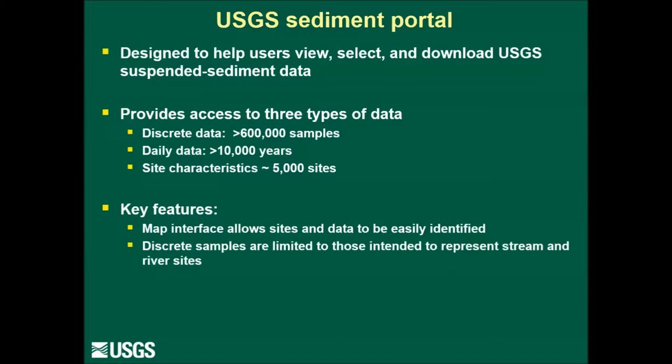The second key feature is that only sites and data provided in the portal are those that were collected with the intention of representing the entire cross-section of stream and river sites. Thus, some data present in the USGS National Water Information System database are not included in the portal, such as quality control samples, samples collected at lakes, or samples collected at specific points in the stream cross-section.